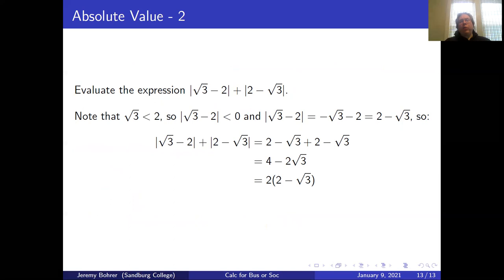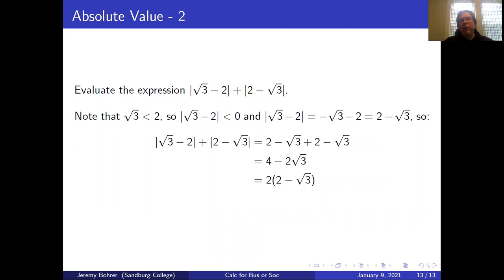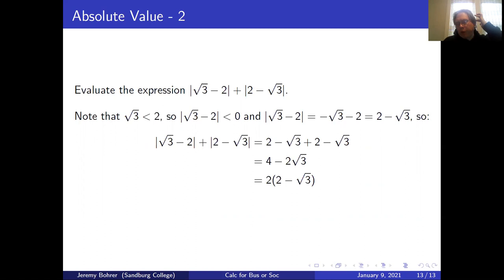To evaluate |√3 - 2| + |2 - √3|: we note that √3 < 2, so √3 - 2 < 0. Therefore |√3 - 2| = -(√3 - 2) = 2 - √3. And |2 - √3| = 2 - √3 as well, since 2 - √3 > 0. So the expression equals (2 - √3) + (2 - √3) = 4 - 2√3, or equivalently 2(2 - √3).